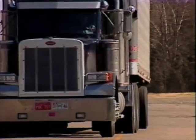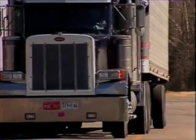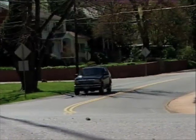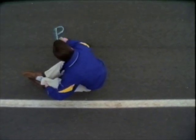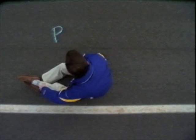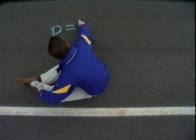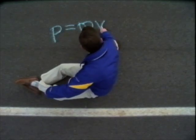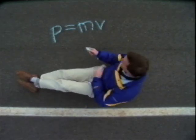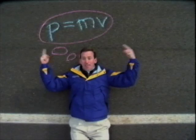Which has more momentum: an 80,000-pound big rig traveling 2 miles per hour, or a 4,000-pound SUV traveling 40 miles per hour? The answer is they both have the same momentum. Here's the formula: P is for momentum — I don't know why they use P, they just do — equals m for mass times v for velocity. P equals mv. That's momentum.